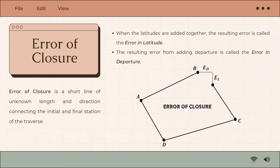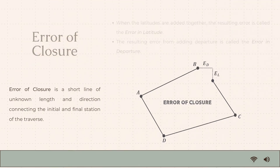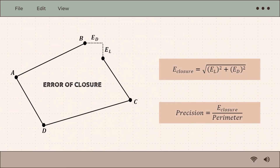Based on the picture, if the measured bearing and distance are plotted on a sheet of paper, the figure will not close because of the error in latitude and the error in departure. To solve for the error of closure, the formula is: error of closure equals the square root of the error in latitude squared plus the error of departure squared. The formula for relative error (precision) is equal to the error of closure over the perimeter, or the summation of all distances.